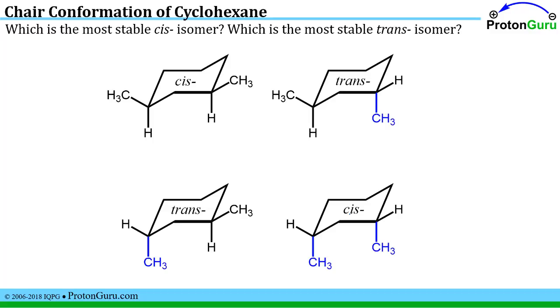The next part of the question is, now that you know what the repulsions are that might destabilize molecules, which is the most stable cis isomer and which is the most stable trans isomer? Well for cis we have this one versus this one.